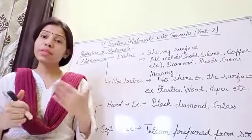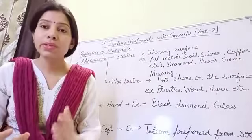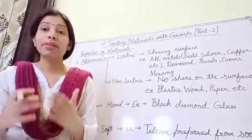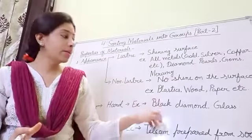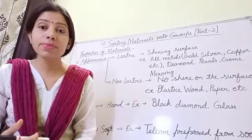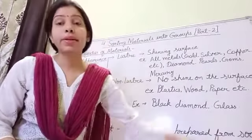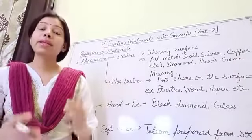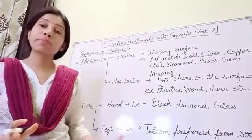Some examples of hard materials: diamond is the naturally occurring hardest material, and among diamonds, black diamond is the hardest. After diamond, glass is the hardest substance. Talcum, which is prepared from soapstone, is the softest material.